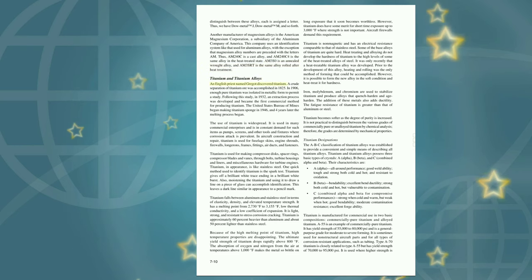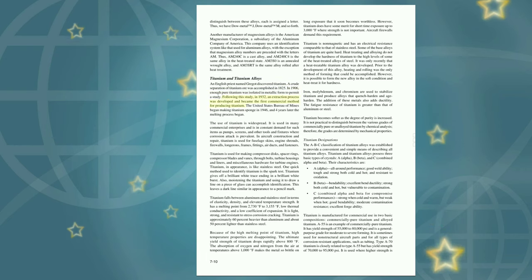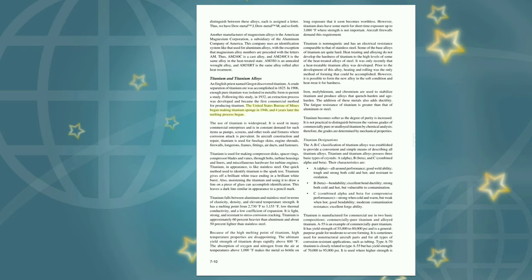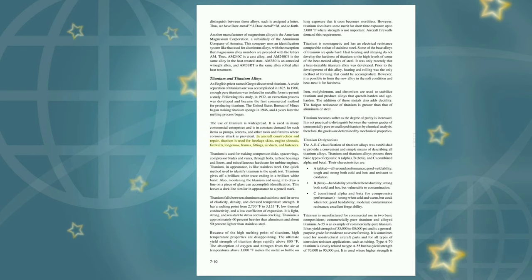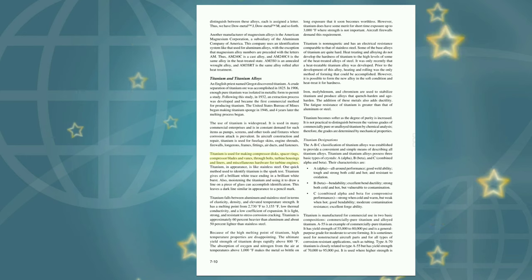Titanium and titanium alloys: Titanium was discovered by an English priest named Gregor. A crude separation of titanium ore was accomplished in 1825, and in 1906 enough pure titanium was isolated to permit a study. In 1932 an extraction process was developed as the first commercial method for producing titanium. The United States Bureau of Mines began making titanium sponge in 1946, and four years later the melting process began. Titanium is used in many commercial enterprises and is in constant demand for pumps, screens, and other tools where corrosion attack is prevalent. In aircraft construction and repair, titanium is used for fuselage skins, engine shrouds, firewalls, frames, fittings, air ducts, and fasteners. Titanium is also used for making compressor discs, spacer rings, compressor blades and vanes, turbine housings and liners, and miscellaneous hardware for turbine engines.